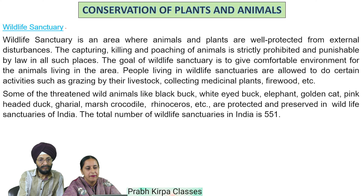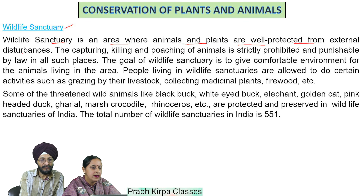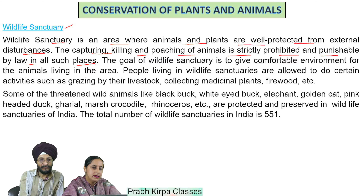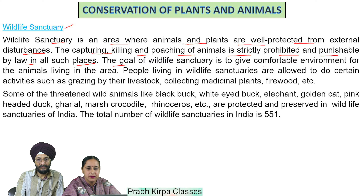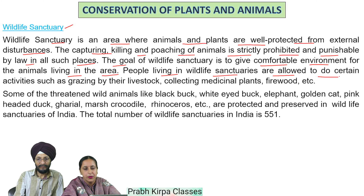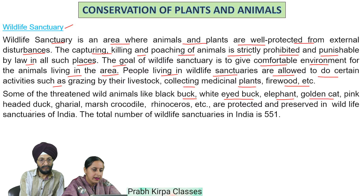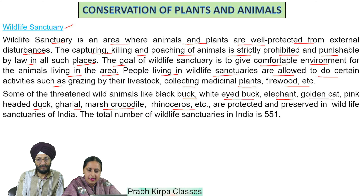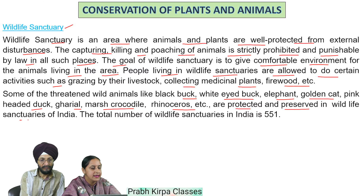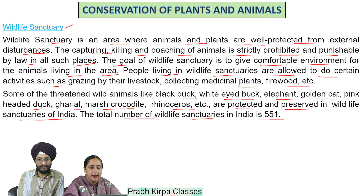A wildlife sanctuary is an area where animals and plants are well protected from external disturbances. The capturing, killing and poaching of animals is strictly prohibited and punishable by law. The goal of a wildlife sanctuary is to give a comfortable environment to the animals living in the area. People living in wildlife sanctuaries are allowed to do certain activities such as grazing by their livestock, collecting medicinal plants and firewood. Some threatened wild animals like black buck, white-eyed buck, elephant, golden cat, pink-headed duck, gharial, marsh crocodile and rhinoceros are protected in wildlife sanctuaries of India. The total number of wildlife sanctuaries in India is 551.